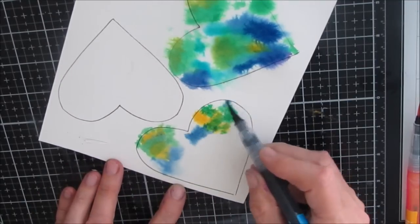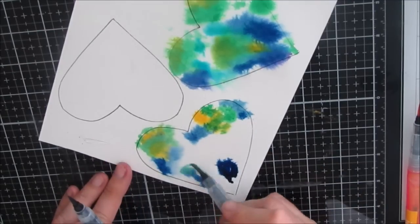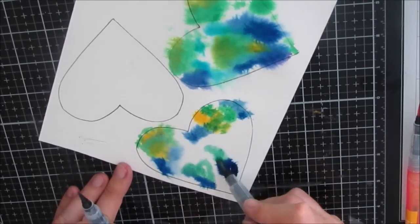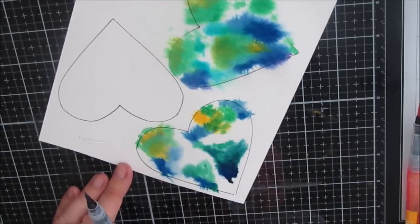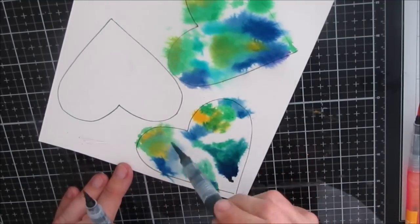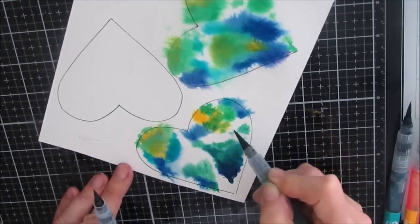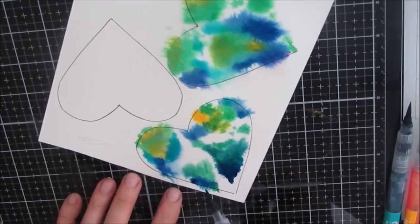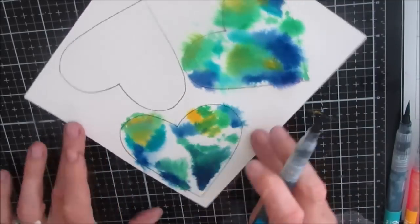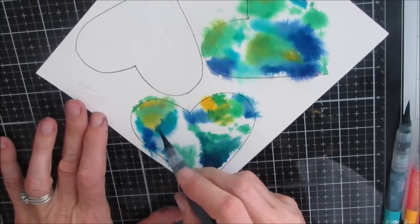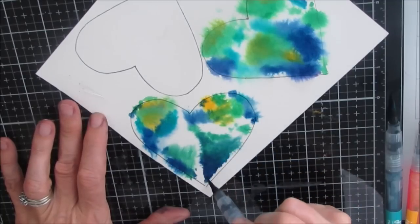Now I used watercolor paper because I wanted that watercolor look, but you could do this just on regular mixed-media paper. You could also use whatever paints or color medium you wish. You can use Neocolor 2s or Inktense blocks or pencils, you can even get this effect using acrylic paints.